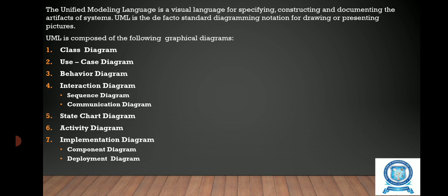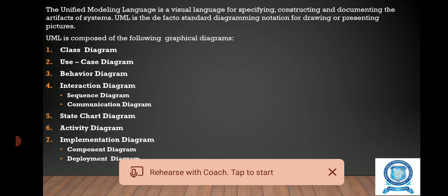UML means Unified Modeling Language, which is a visual language for specifying, constructing, and documenting the artifacts of a system. UML is the de facto standard diagrammatic notation for drawing or presenting pictures of a system.